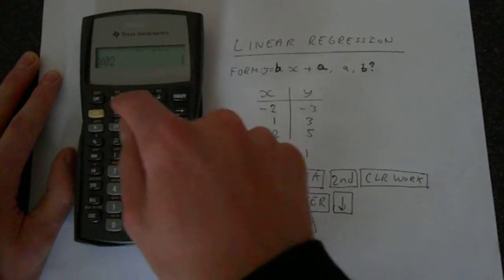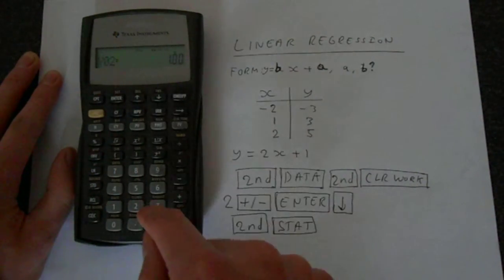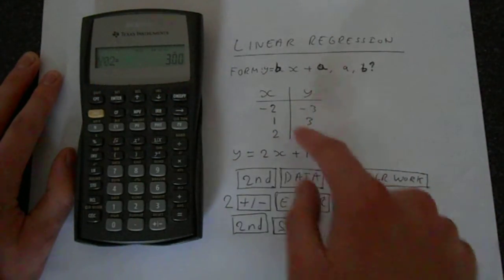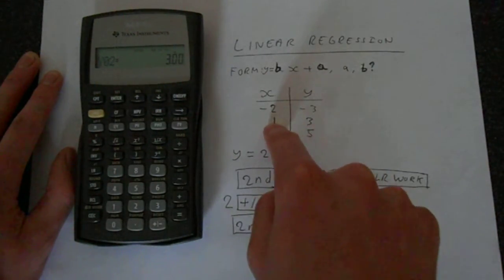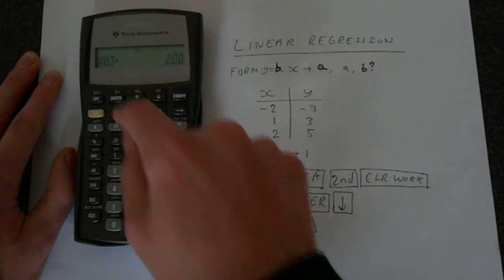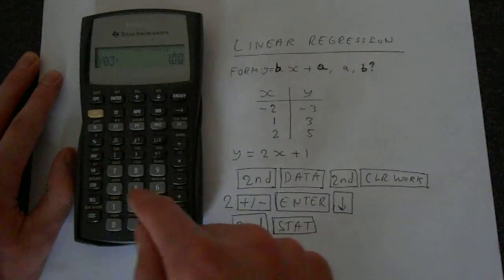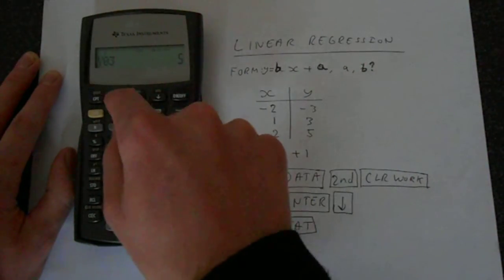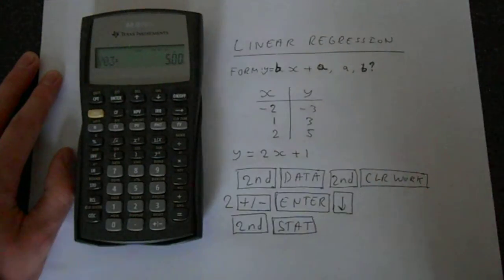We do 1, enter, then go down, 3, enter. You see this is row 2, y2, x1, and then go down. This is of course x3, so 2, then we go down, and then the last one is 5. So it's entering alternatively x and y's, and now that's all of the data entered.